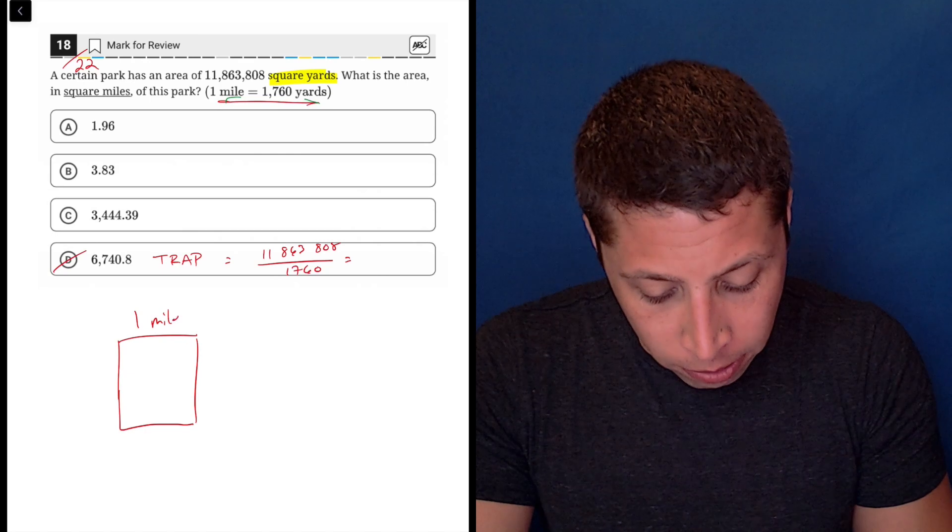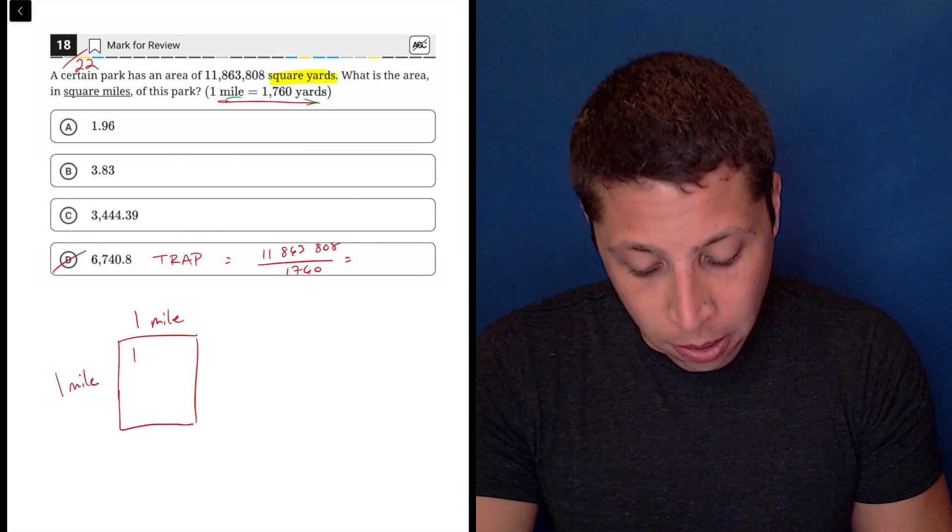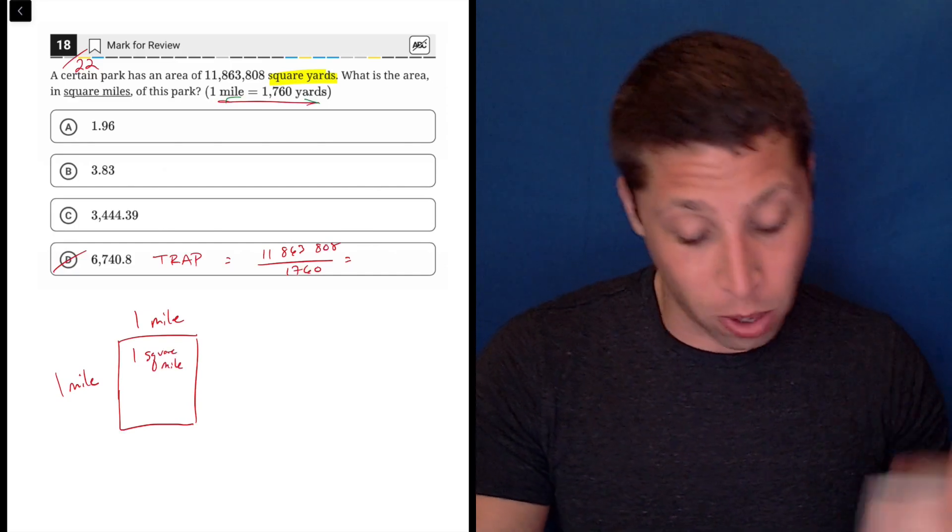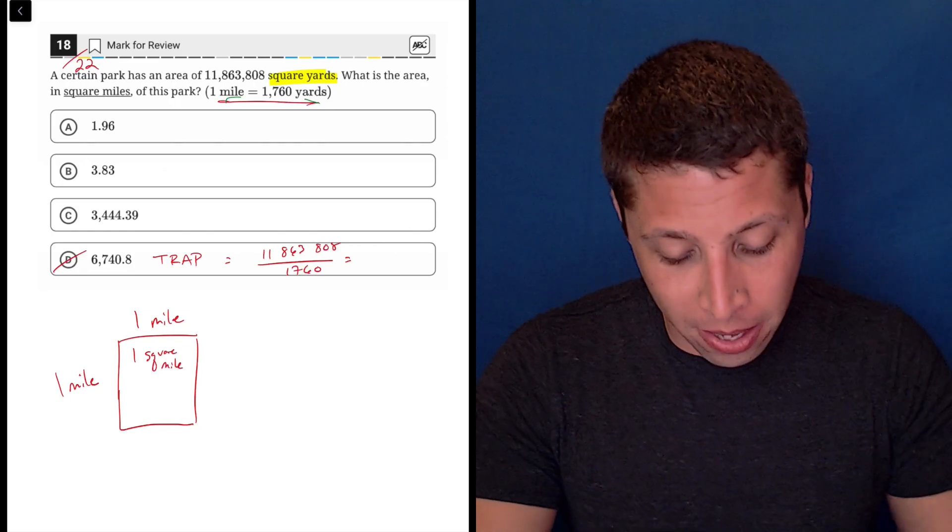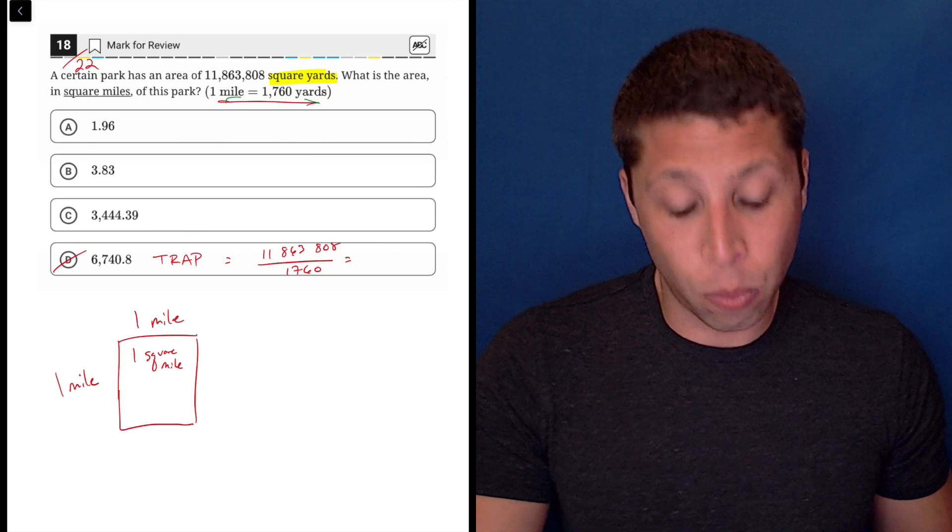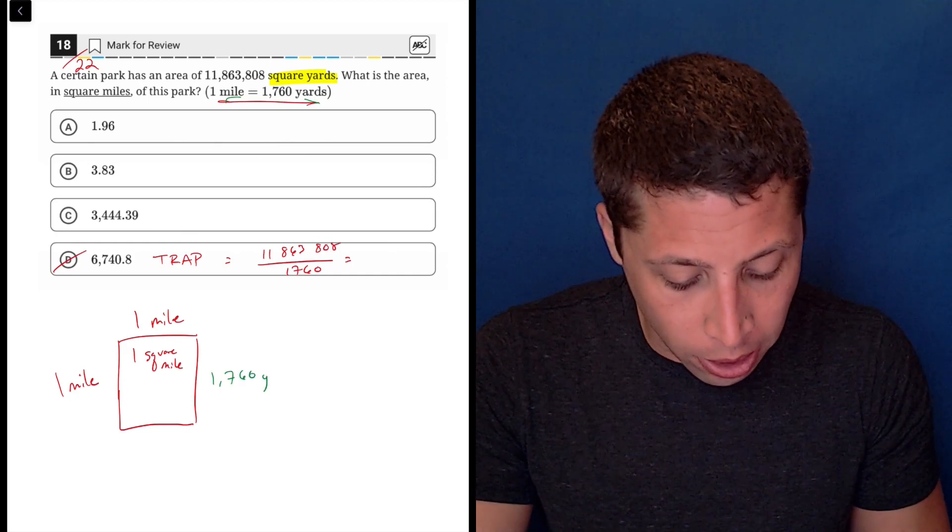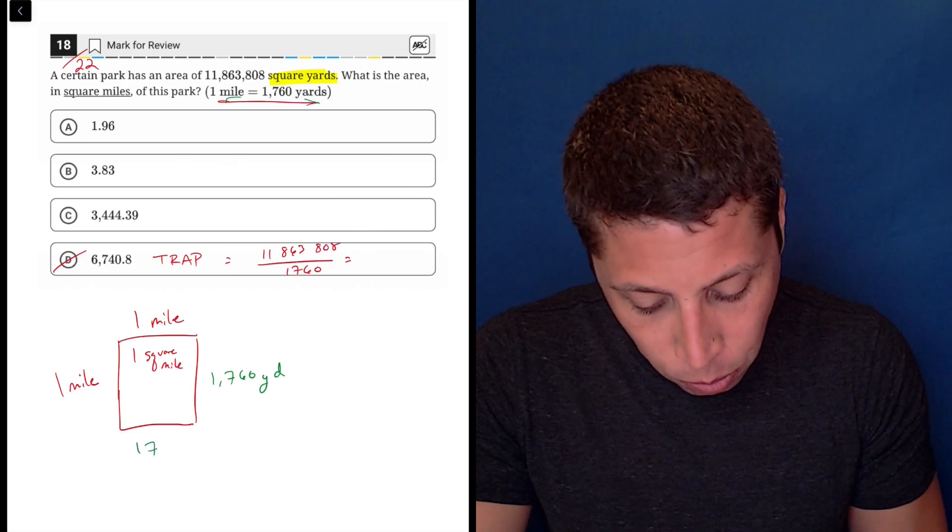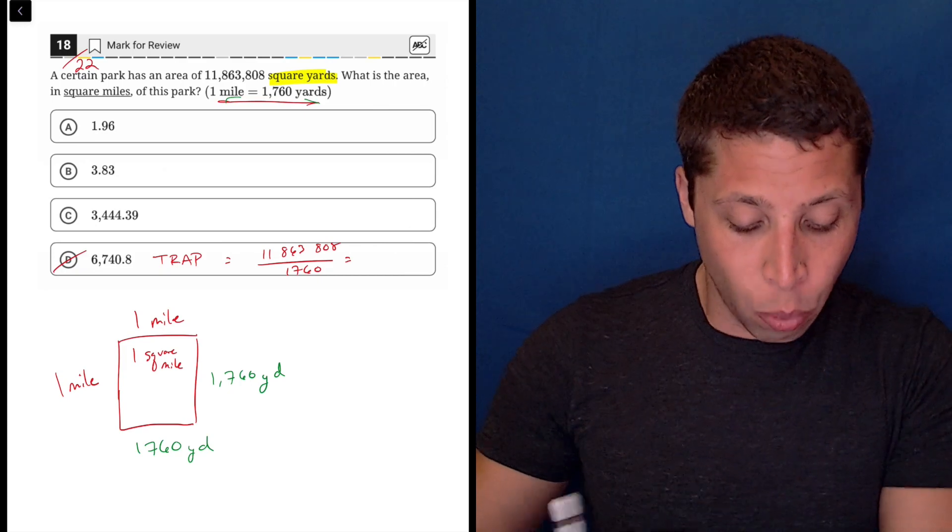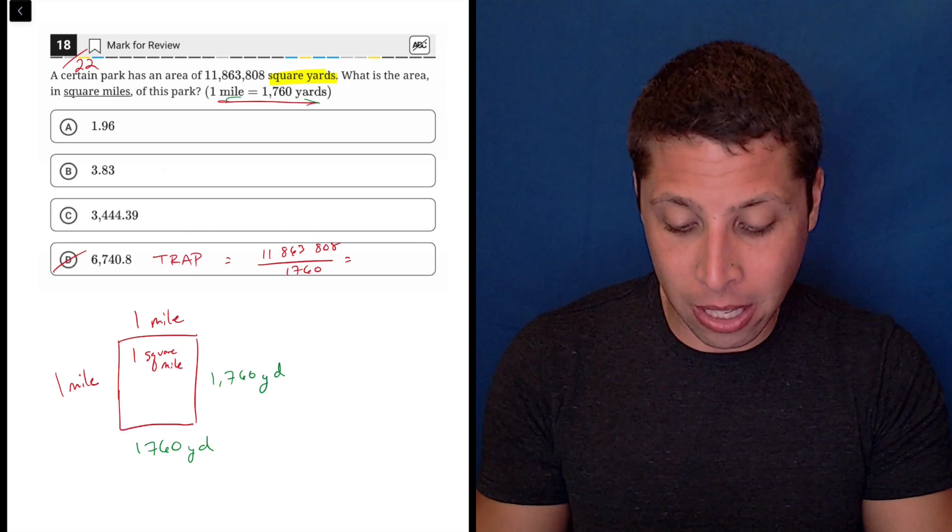So if I made this one mile on a side, right, it's a square, then this would be one square mile. Hooray. One times one is one, right? That's where it's coming from. Now we can also label this using yards, right, because if one mile is 1,760 yards, then the length and width can also be written in yards, 1,760 on each side. But now if we took the area, we would be multiplying 1760 times 1760. So that's going to be different.